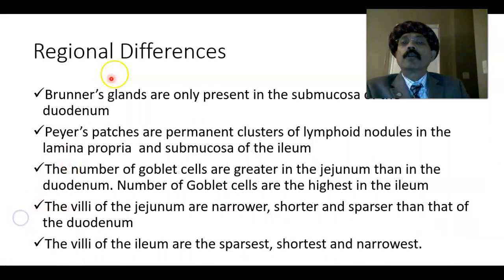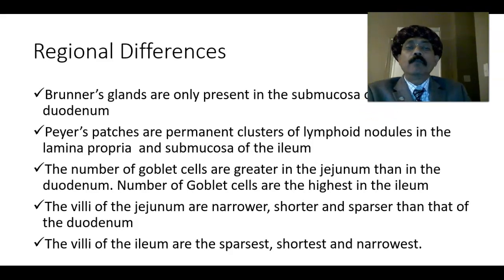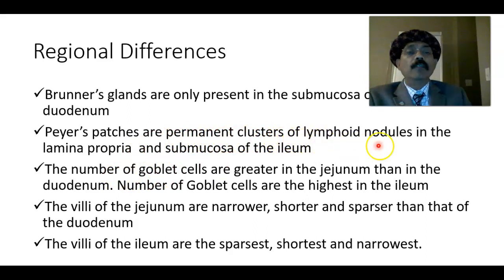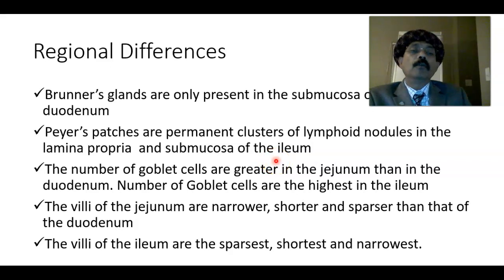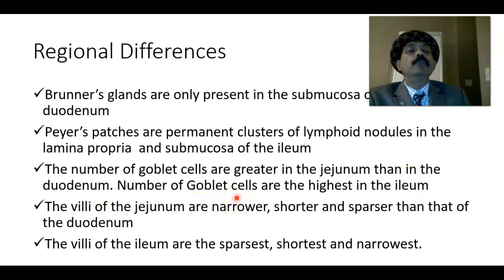What are the regional differences? Brunner's glands are only present in the submucosa of the duodenum. Peyer's patches are permanent clusters of lymphoid nodules in the lamina propria and submucosa of the ileum. They may be present in the lower part of the jejunum, but are mostly present in the ileum. The number of goblet cells is greater in the jejunum than in the duodenum. Goblet cells are unicellular glands that secrete mucus, and their number is highest in the ileum.